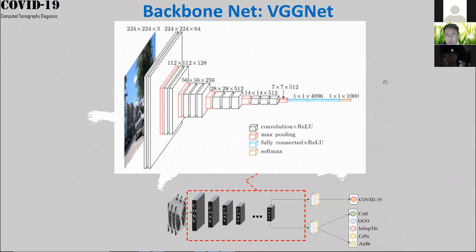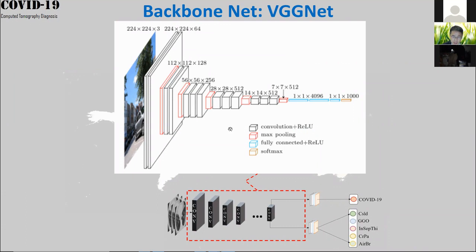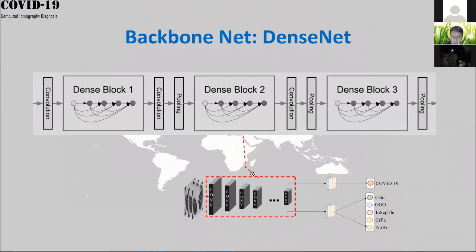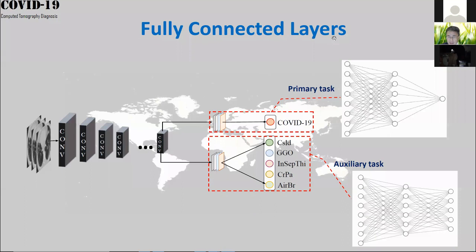We use five different backbone networks: VGG net from the University of Oxford, DenseNet, and EfficientNet with different numbers of hidden layers. To suit our purpose, one branch outputs a binary COVID-19 classification and the other branch handles the multi-label task. We added several fully connected layers for both purposes.